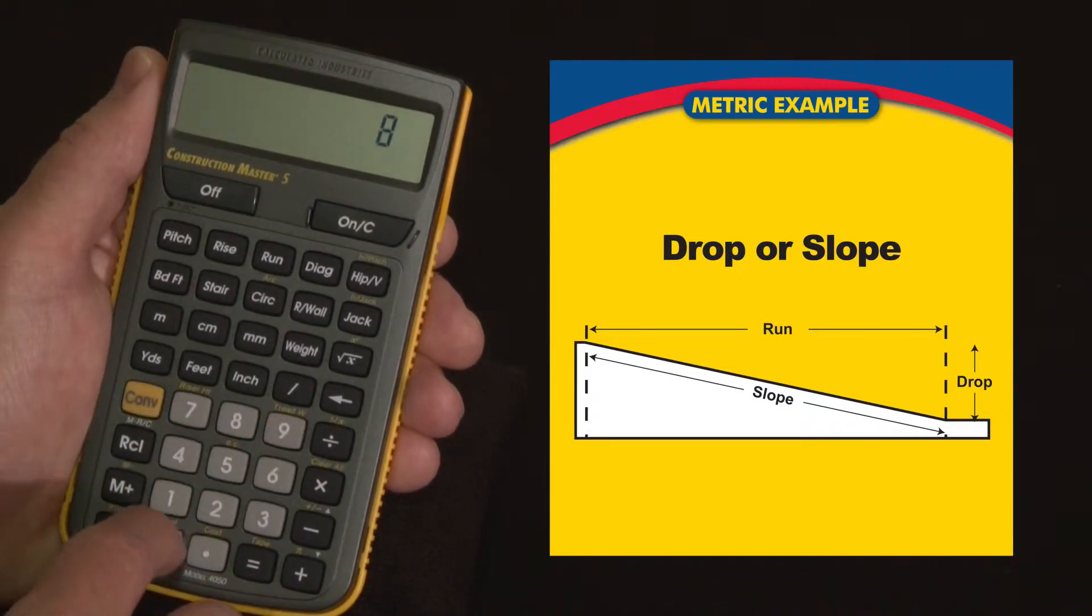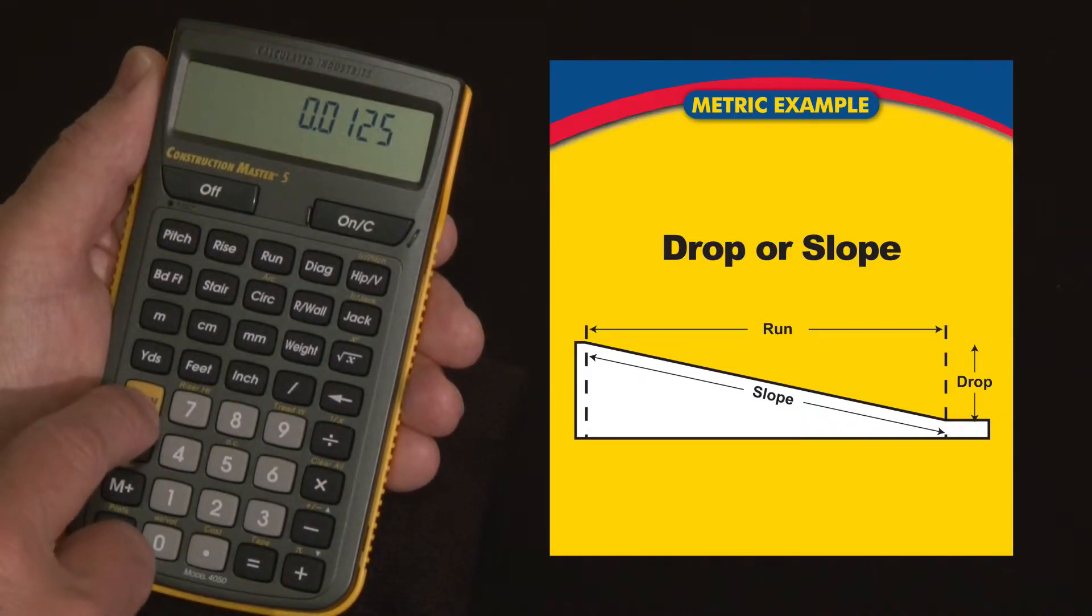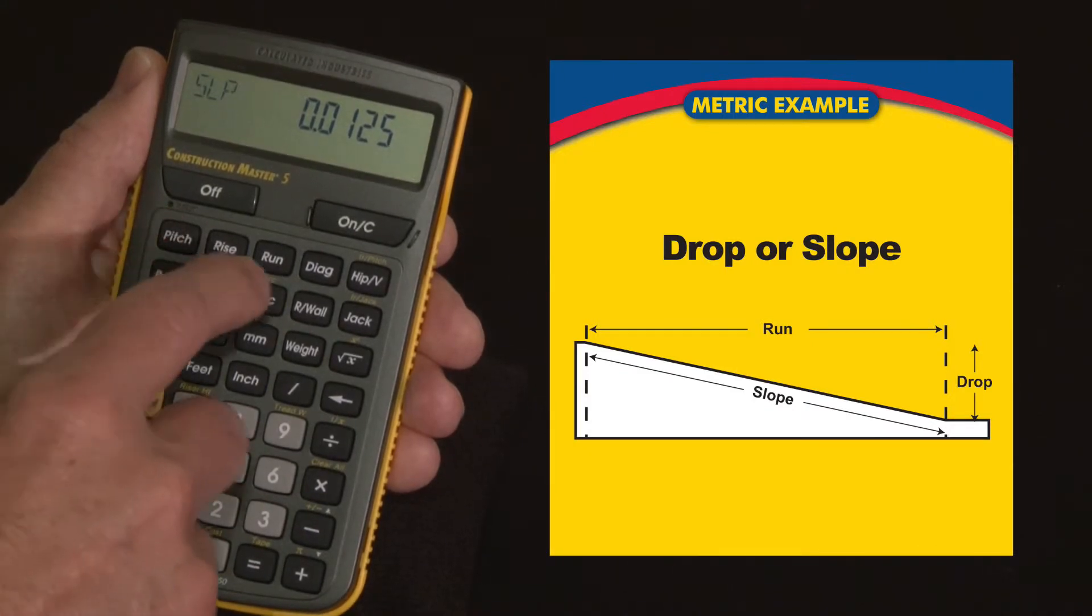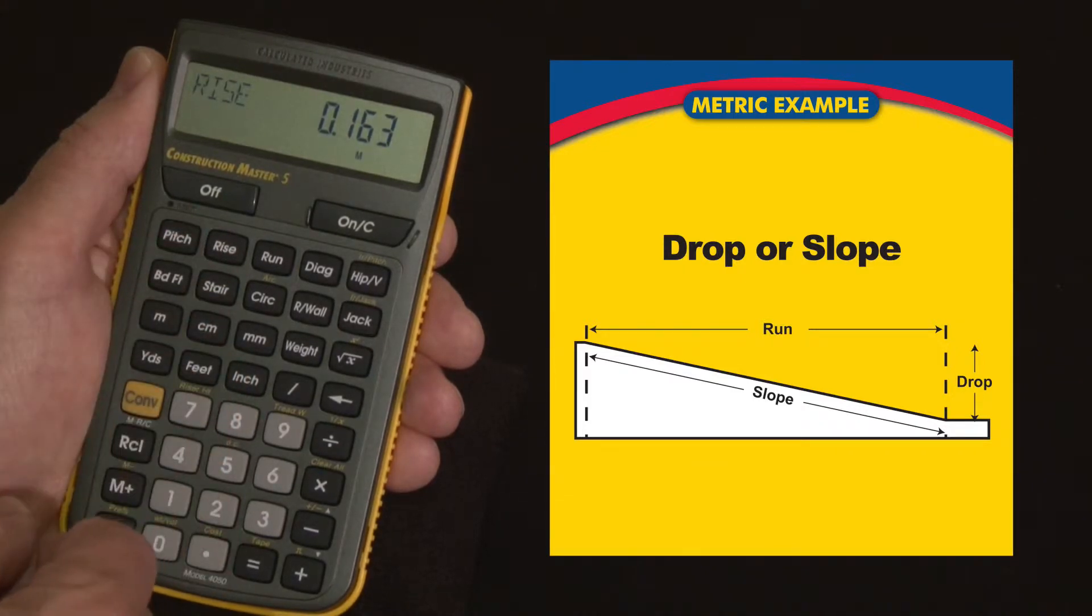So 1 divided by 80 equals, and I just hit convert to pitch, the run we entered is still in there so I'm not going to re-enter it, and then just hit the rise and that's going to be 163 millimeters lower and you might say well that's going to work out just fine, so we'll leave that.